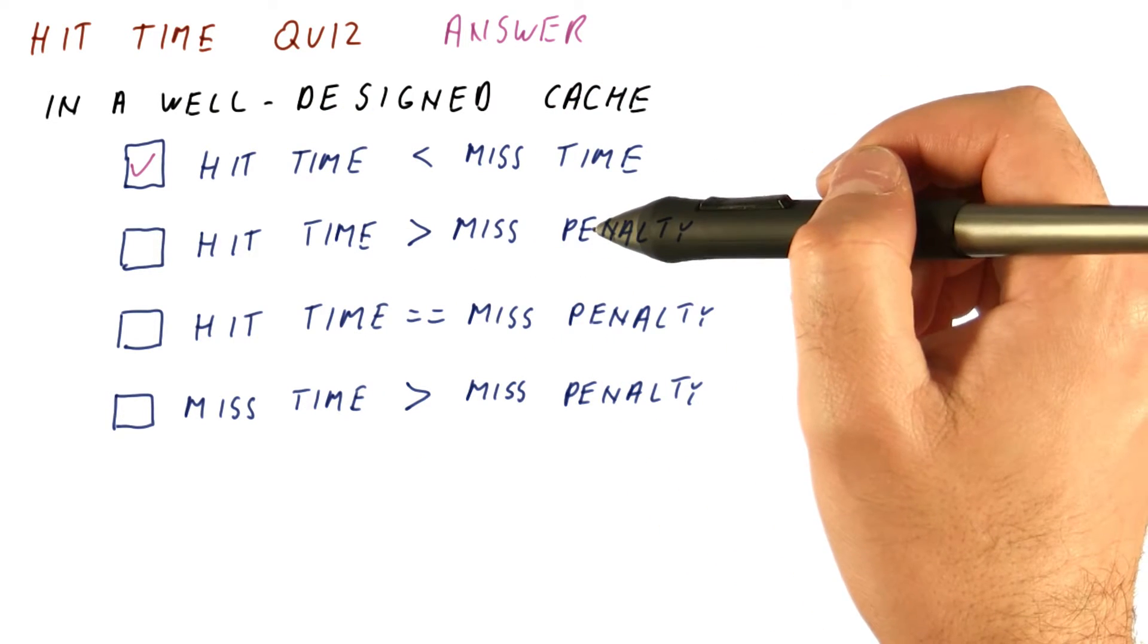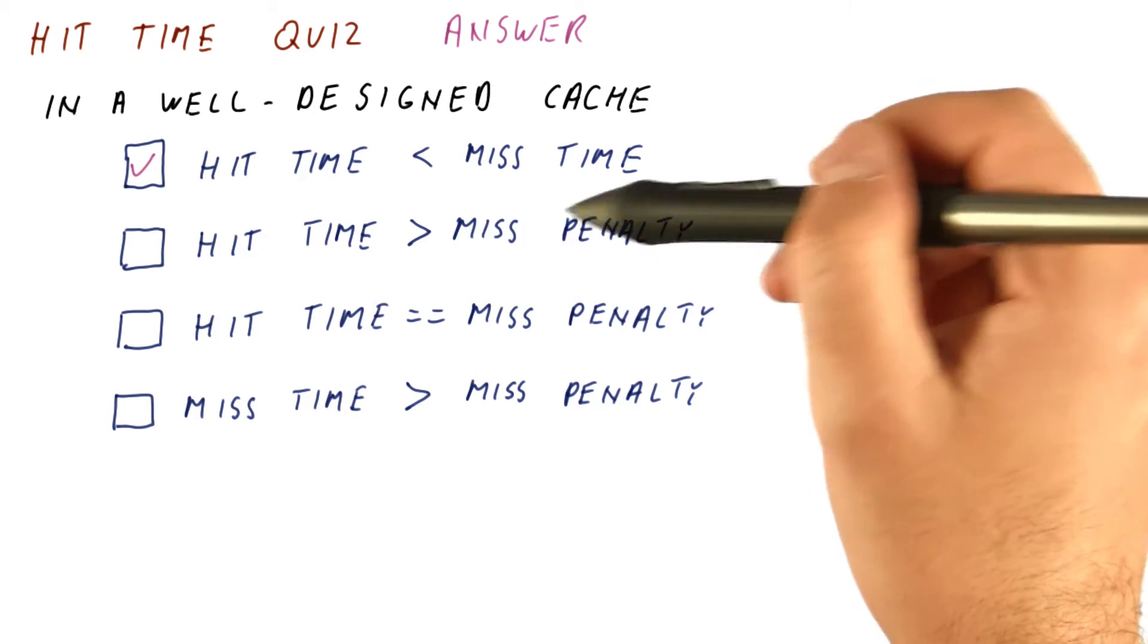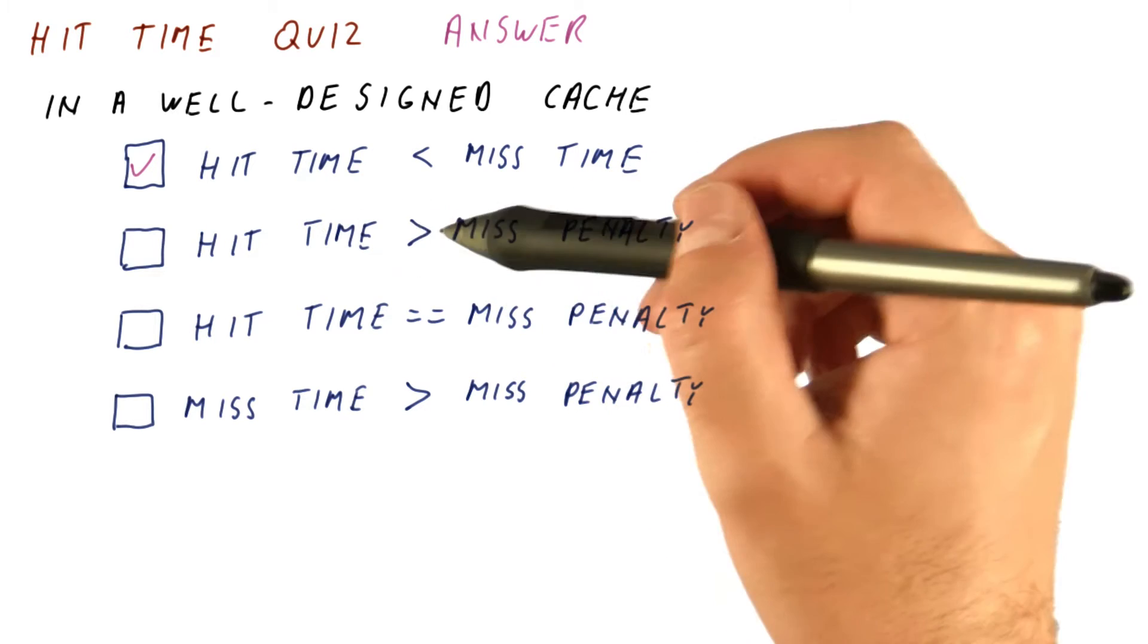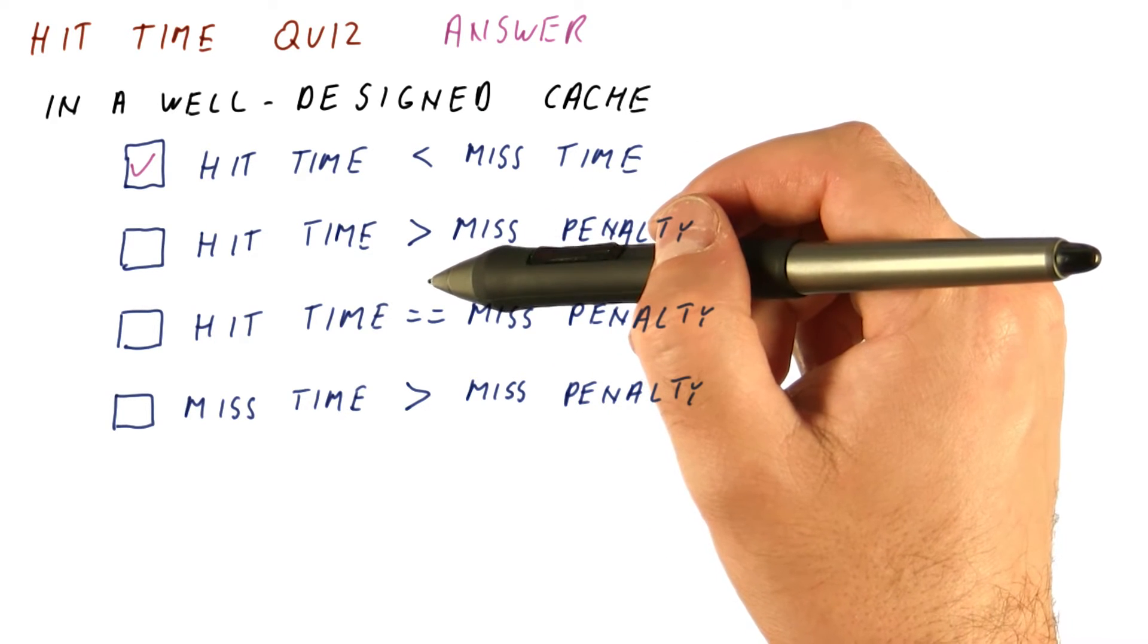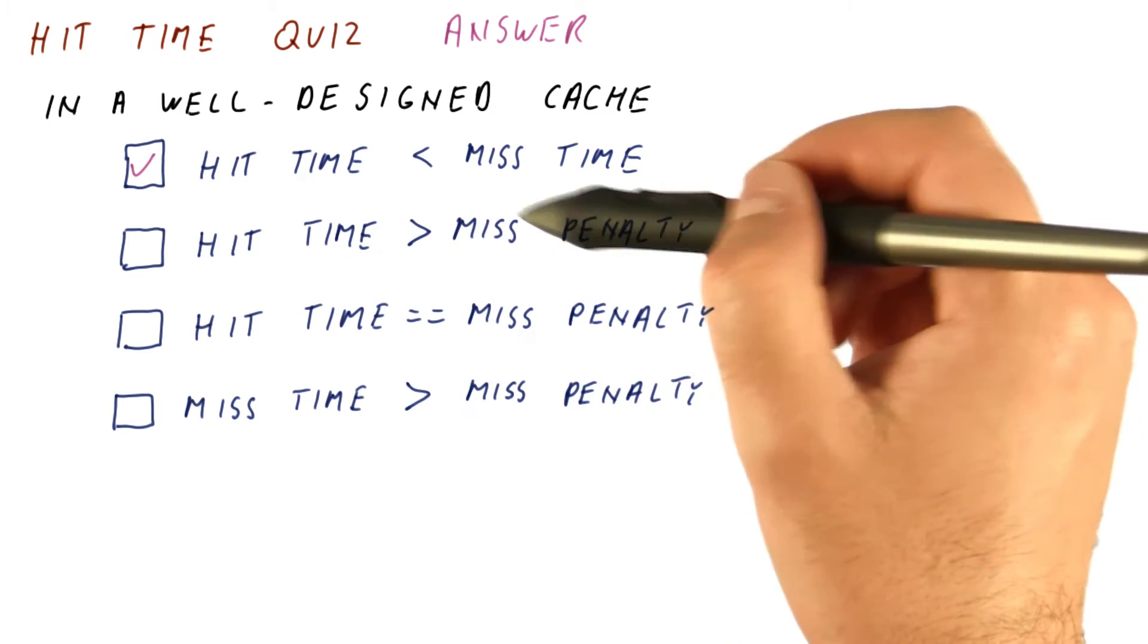Hit time is larger than the miss penalty. We definitely don't want that. The miss penalty is the memory access time. If our hit time is similar to that, or larger than that, then the cache is not going to be useful at all. So this should not be selected.